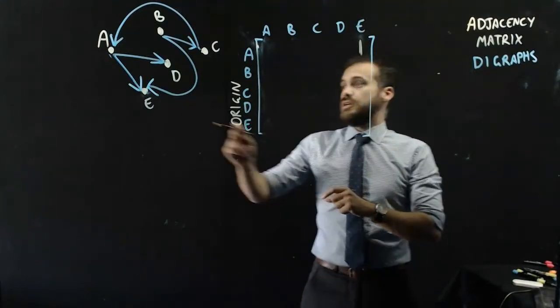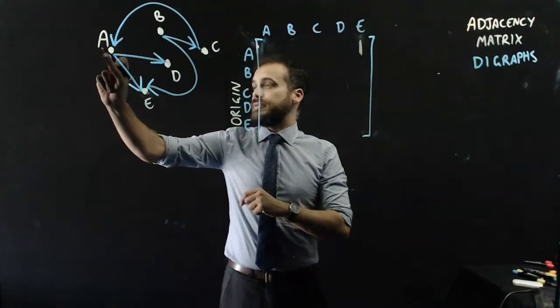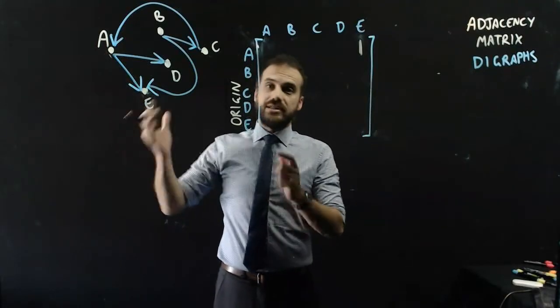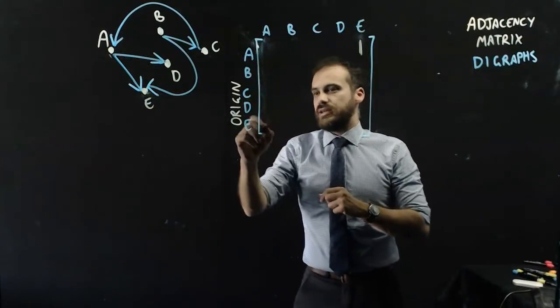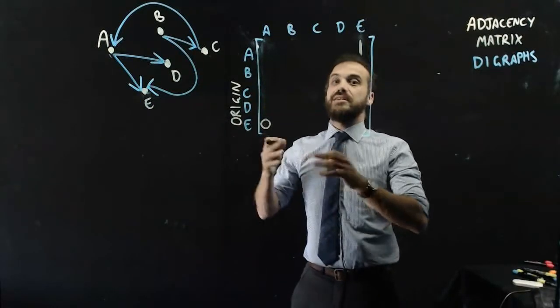Now let's do the other version, E to A. That doesn't happen. E doesn't go to A. We start at E and we can't get to A. Zero. E doesn't get eaten by A.